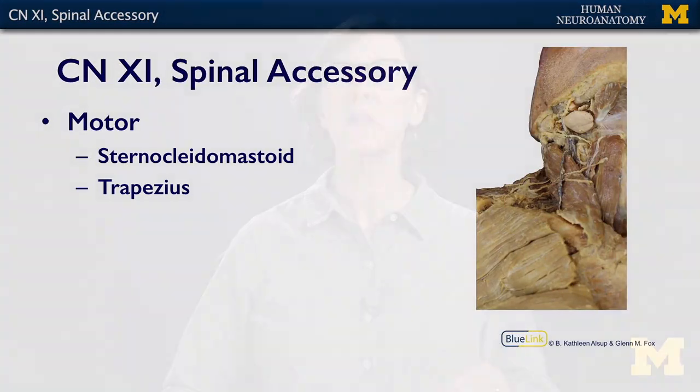The sternocleidomastoid you can see in the anterior part of the neck when you turn your neck — you can see that muscle here — and your trapezius is what allows you to shrug your shoulders.